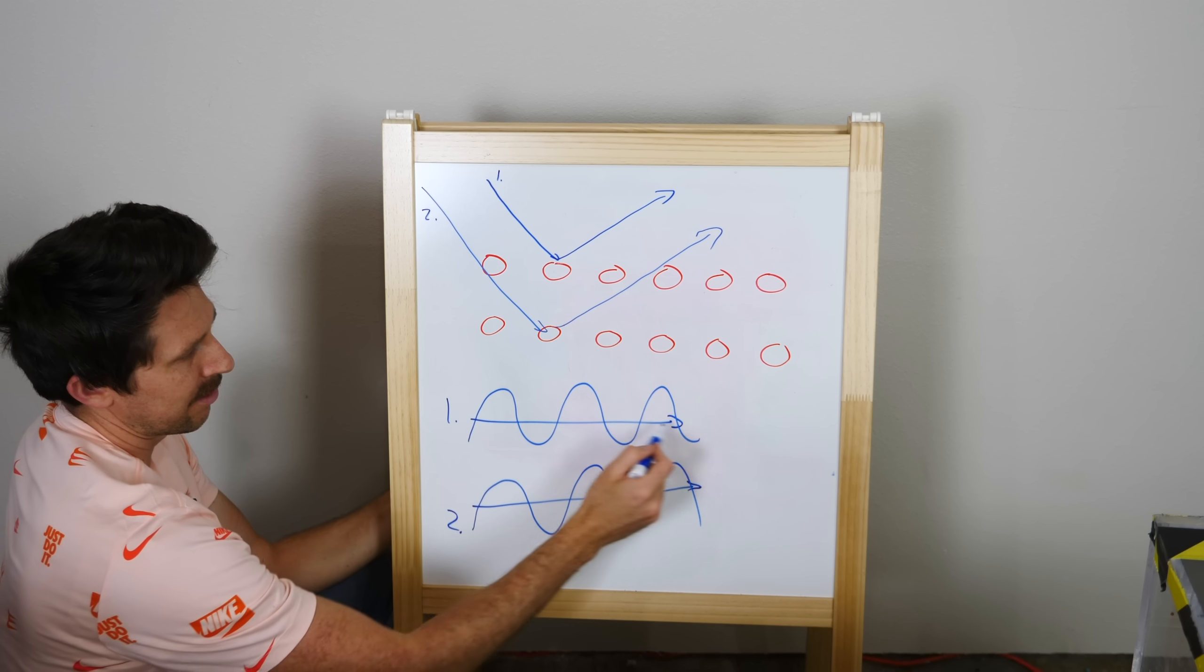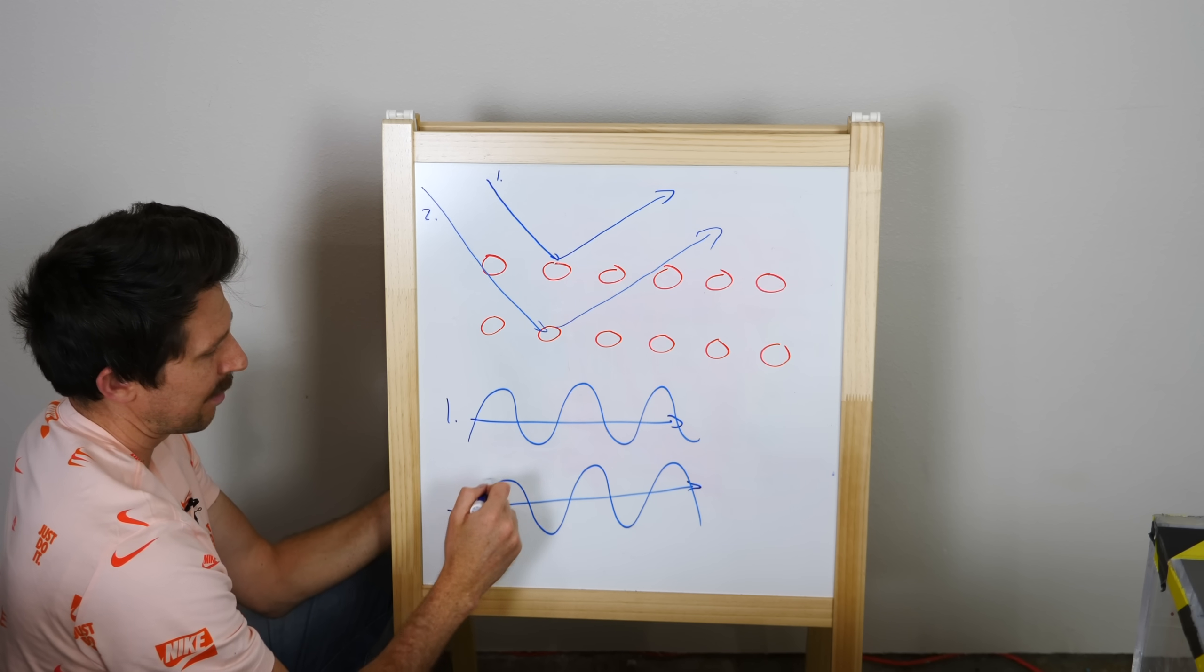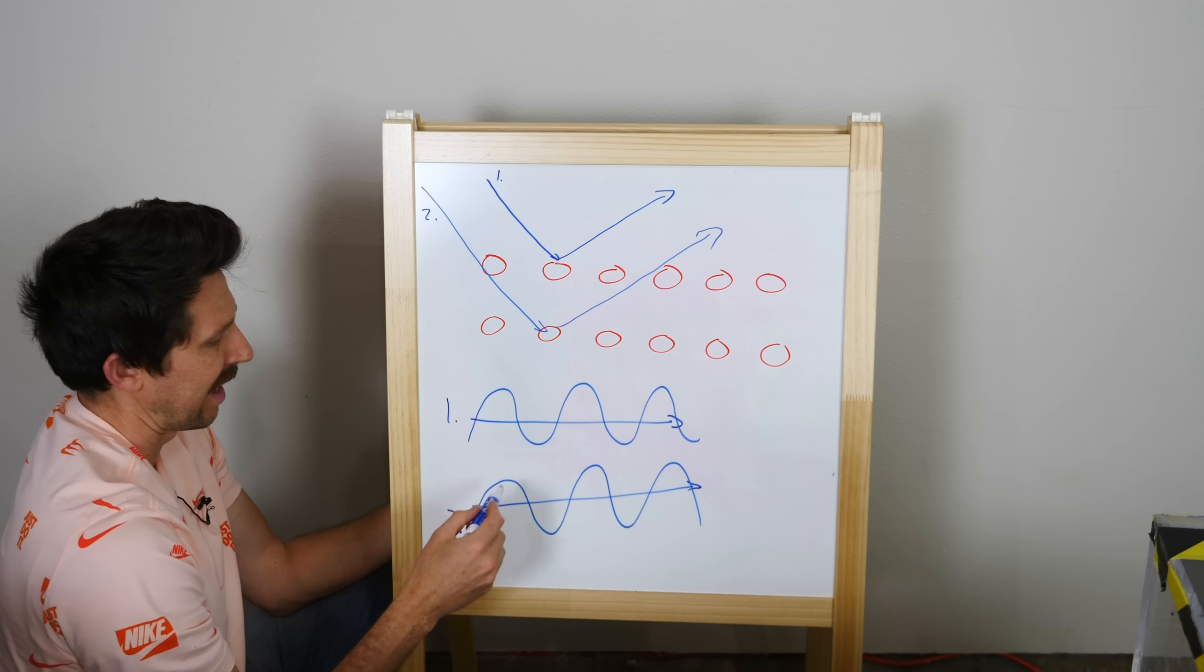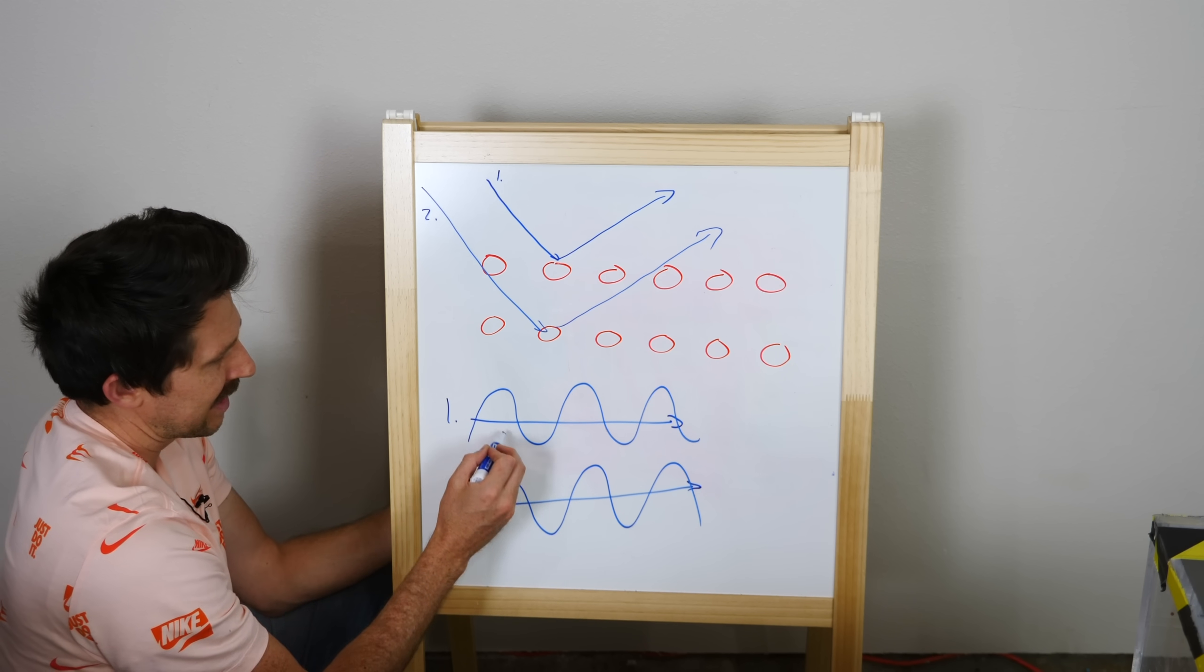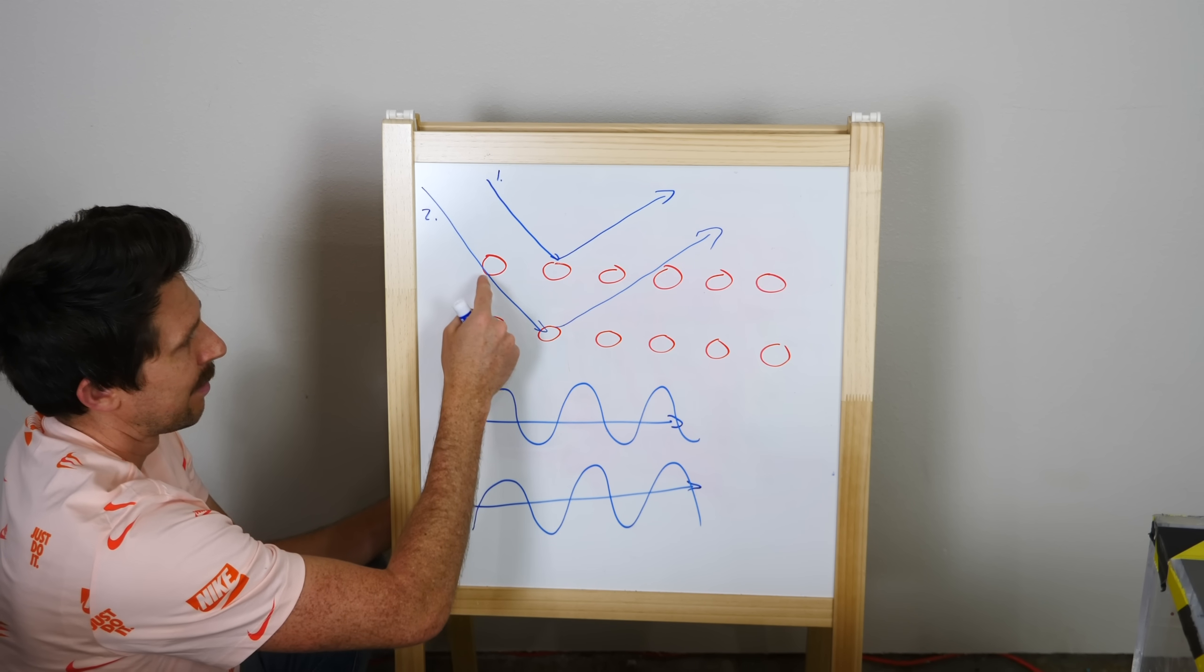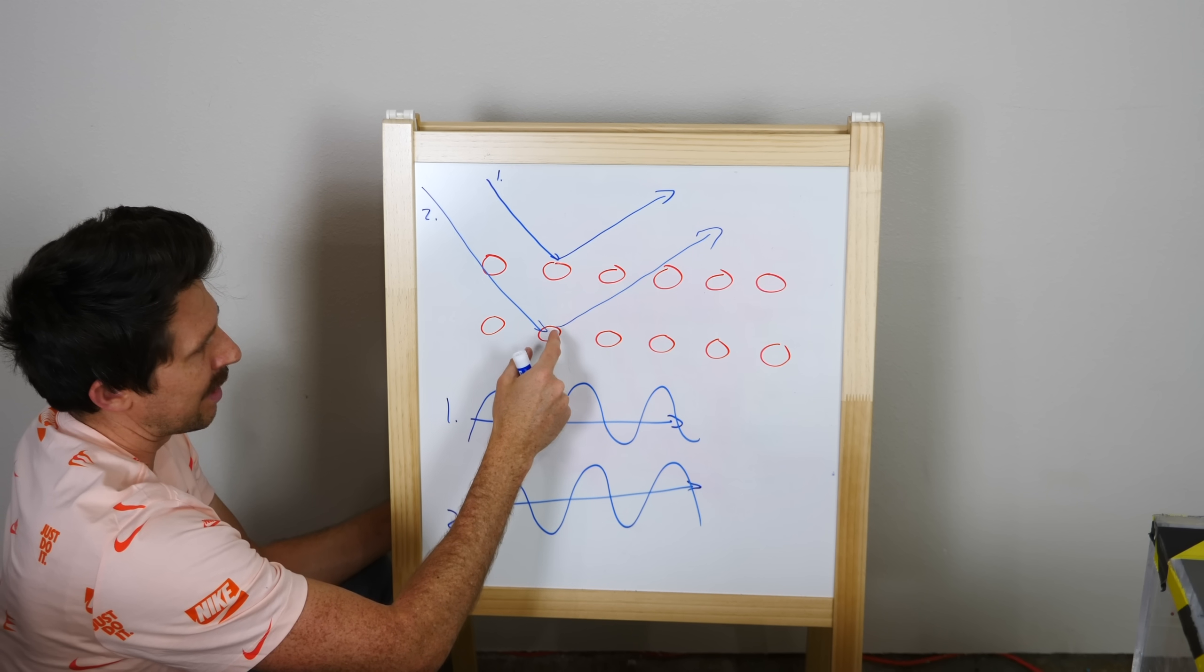So if I take ray one and ray two and draw them down here, but this time I draw them as a wave form, meaning they're electromagnetic waves, you'll notice that their peaks and valleys line up. But when they exit the material, their peaks and valleys don't line up anymore because this one had to travel a little bit more.